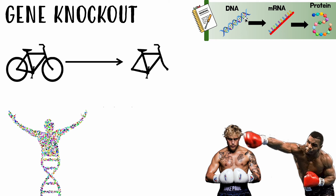If we silence a gene — meaning we make it useless, like when you knock someone out — then we can't make that mRNA. That organism will not be able to make that protein. If they can't make that protein, then some function will not be carried out and we will see some effect in the body — maybe a disease, maybe some side effect.